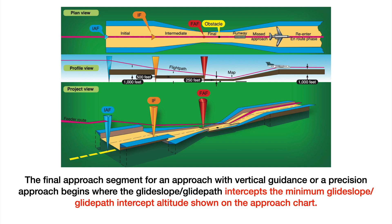Another important term: the Final Approach Segment for an approach with vertical guidance or a precision approach begins with glide slope or glide path intercept at the minimum glide slope or glide path intercept altitude shown on the approach chart. Remember that because that's going to be an answer to one of the questions coming up.